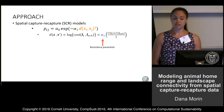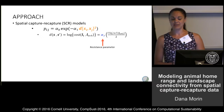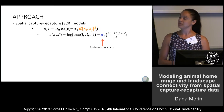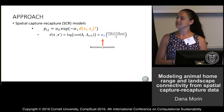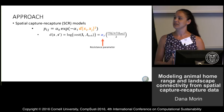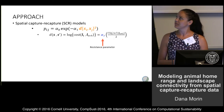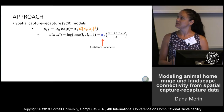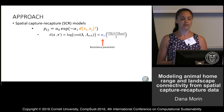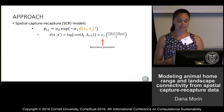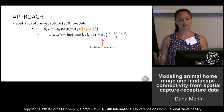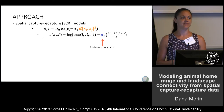As Andy mentioned, we can estimate a resistance parameter, so we don't have to consider it as a Euclidean circular home range. We can estimate the cost of moving from pixel to pixel based on where we detect these individuals as a function of some covariate.